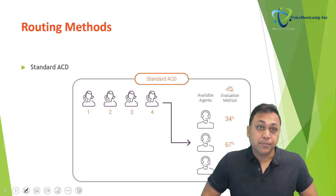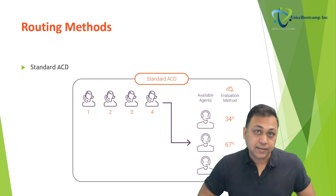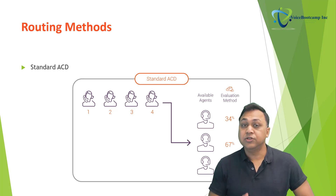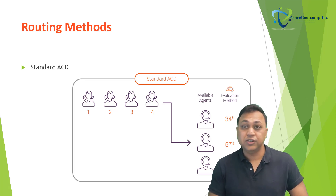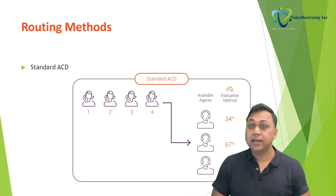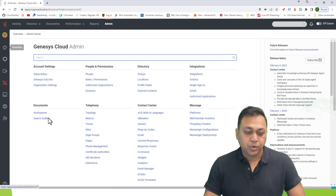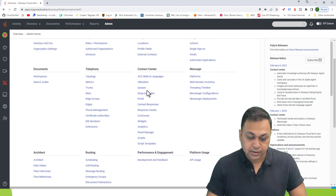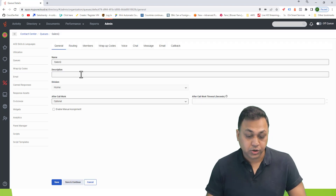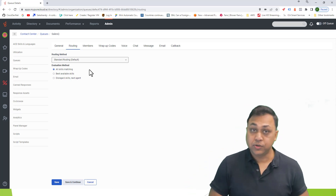There are two types of routing method: standard ACD and bullseye ACD. The standard routing method builds the initial list of available agents to consider for routing. It routes the interaction to the next available agent and considers the skills as specified in the evaluation method. For example, if I go to my queue and select the sales queue I created and go to routing, those are the three options of evaluation method we have.